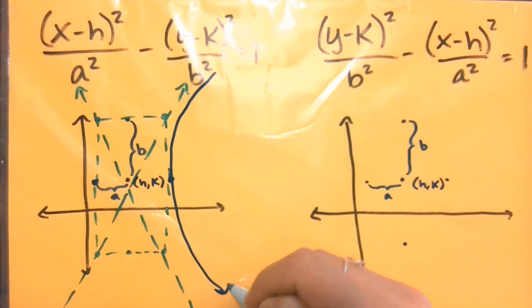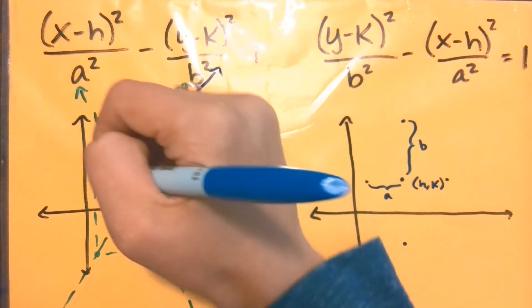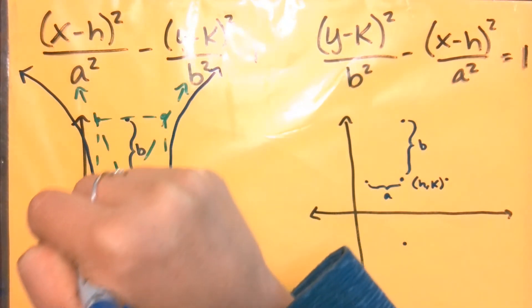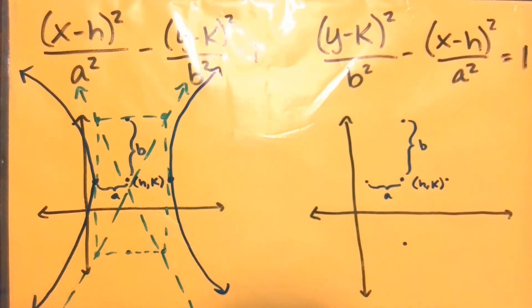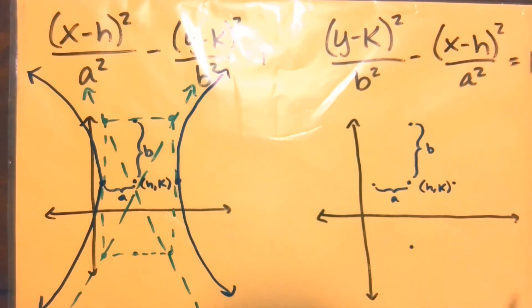I'm using those asymptotes as a guide, so that will be its vertex, but it's going to get really close to those asymptotes on either side. Same thing on the left. So this would be what the hyperbola looks like if x is the leading term.